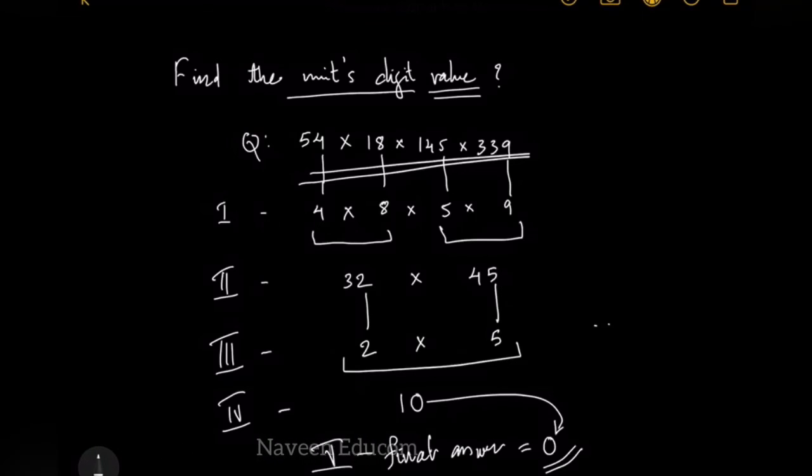So the unit digit value of 54 × 18 × 145 × 339 is 0. That is how we obtained it, and this is a very simple and easy step we can solve without taking pen and paper. Hope you like it. Thank you, we will meet in another video.